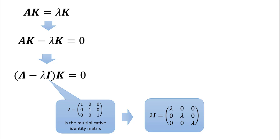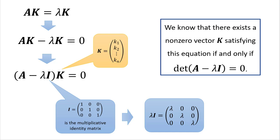We're trying to find lambda, the eigenvalue, and k, the eigenvector, for a given matrix — so we treat those as unknowns. Vector k in general form has components k1, k2, up to k sub n, which we treat as variables. This equation altogether represents a system of n equations with n unknowns. Based on our experience solving systems using matrices, we know a non-zero vector k satisfying this equation exists only if the determinant of the coefficient matrix A minus lambda I equals zero. This fact is what helps us find the eigenvalues and eigenvectors.